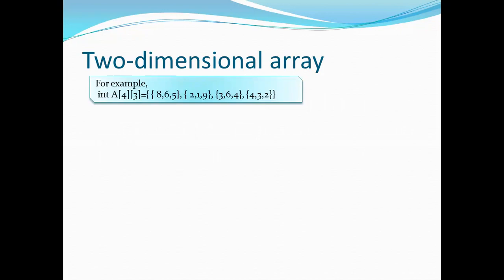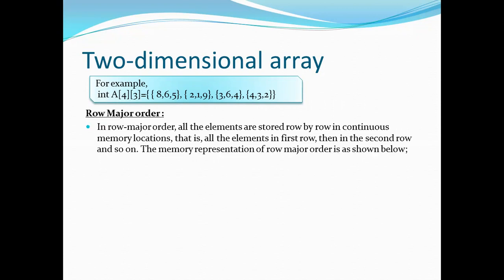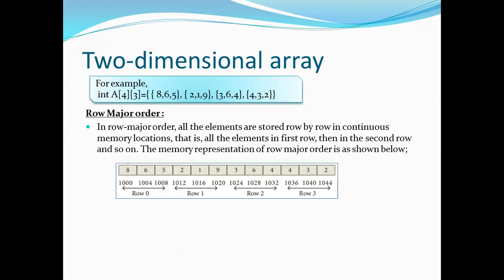Now, int A is equal to 4,3. That is the value. In the row major order, where does the memory represent? 8, 6, 5 is the first row. Next row is 2, 1, 9, second row. This row is 3rd row, this row is 4th row. Row 0, row 1, row 2, row 3.